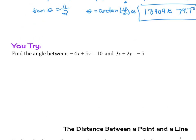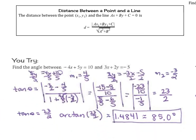Now try this example: find the angle between negative 4x plus 5y equals 10 and 3x plus 2y equals negative 5. The first equation has slope positive 4/5, and the second has slope negative 3/2. Applying the formula, the answer is 1.4841 radians and 85 degrees.